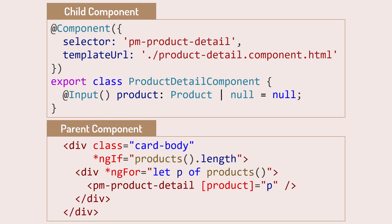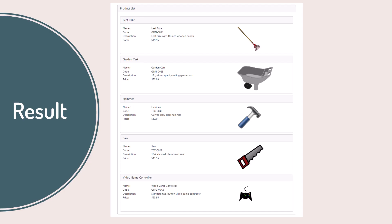The child component expects to receive a value for this property so it can display that product's detail. Here is the parent component's template. We pull in the child component using its selector. The child component template will appear here for each product in the array. The parent passes data to a child component by binding to its input properties. In this example, the parent binds the child component's product input property to P, which represents each product. The result: a child component for each product displaying that product's detail.